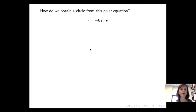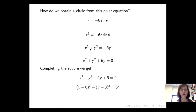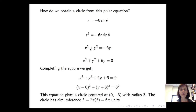Starting with r equals negative 6 sine of theta and multiplying both sides by r, we get r squared equals negative 6r sine of theta. Since r squared equals x squared plus y squared, and r sine of theta equals y, we get x squared plus y squared equals negative 6y. Adding 6y to both sides and completing the square gives x squared plus (y+3) squared equals 9 — a circle centered at (0, -3) with radius 3. Its circumference is 2π times 3, which is 6pi units, confirming our answer.